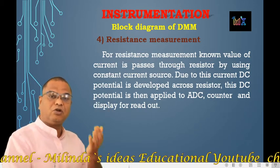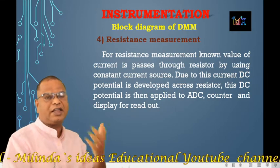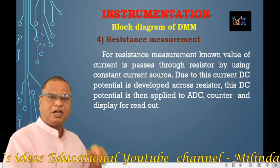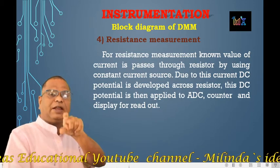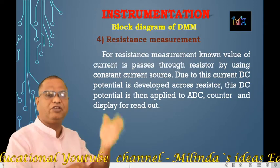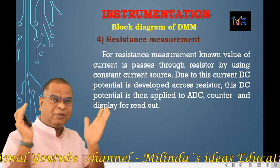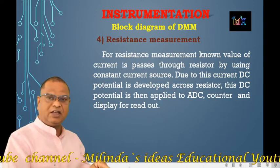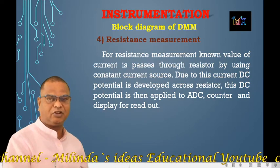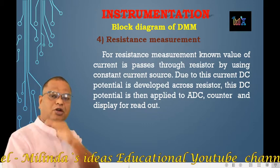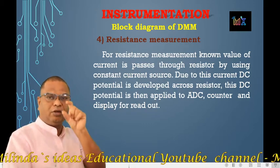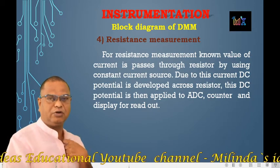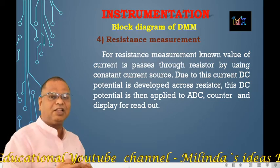For the constant current source, we use a battery — either a 1.5 V, 3 V, or mostly a 9 V battery in the digital multimeter. Due to the current flow from that battery, we get a potential drop, and that potential drop is measured using the A to D converter. So these are the preliminary blocks which convert the input signal into DC voltage: the DC attenuator, AC attenuator with rectifier, the current-to-voltage converter, and the constant current source for resistance.